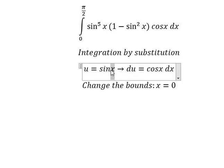Next we need to change the bounds. When x = 0, I will put 0 in here to find the value of u, so u = 0. When x = π/2, I will put π/2 in here to find the value of u, so u = 1.